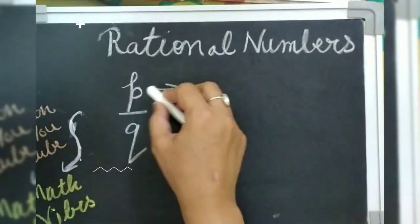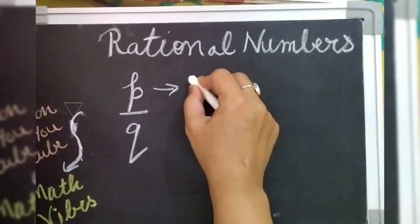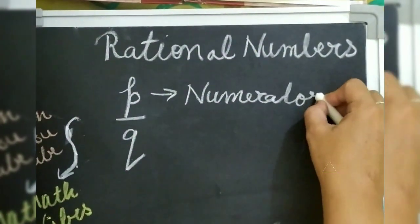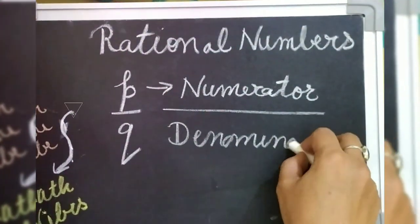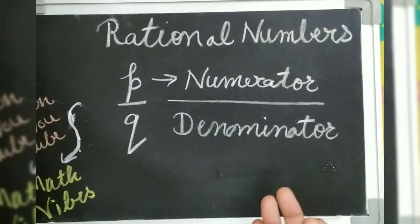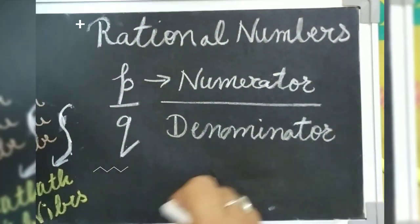And in a fraction, the number which is above is represented as numerator and the number which is below is represented as denominator. Well, then what are numerator and denominator? Guess, I'll give you the time to think.